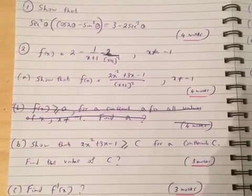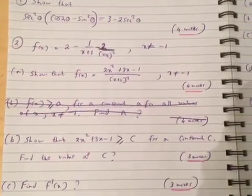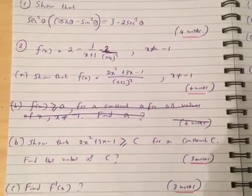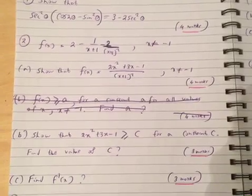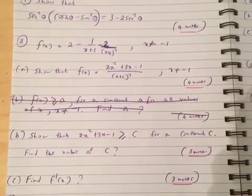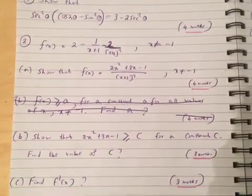Question 2: f(x) equals 2 minus 1 over x plus 1 minus 2 over x plus 1 squared, where x is not equal to minus 1. Show that f(x) equals 2x squared plus 3x minus 1 over x plus 1 squared, where x is not equal to minus 1 again.